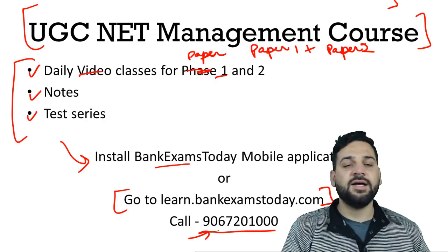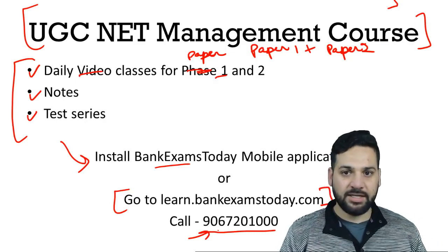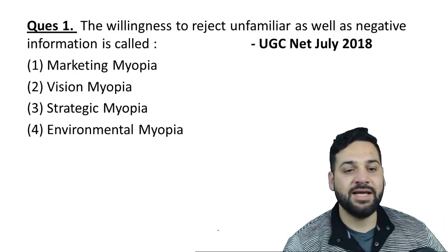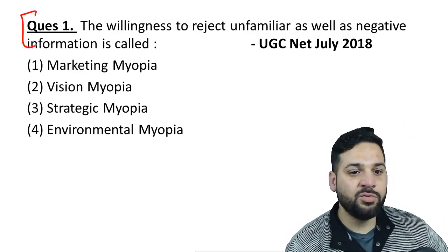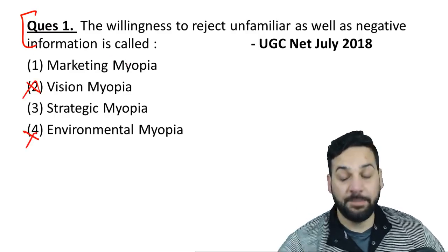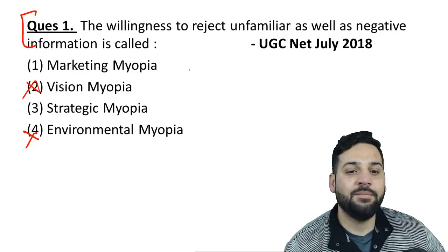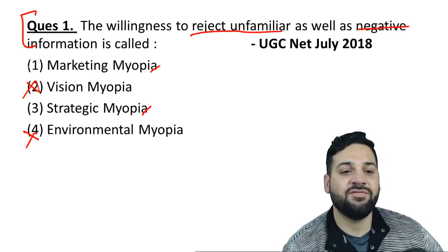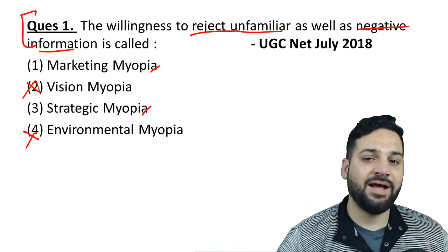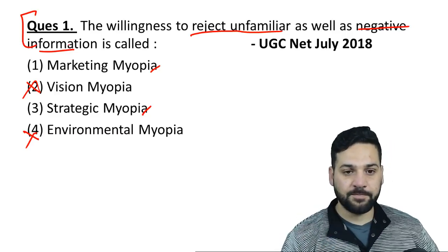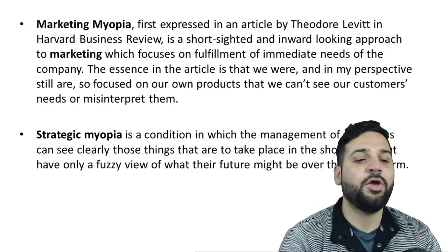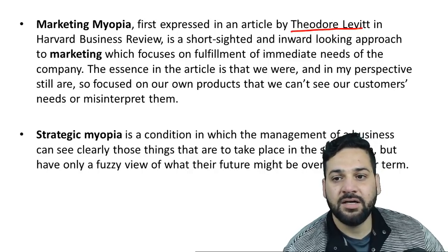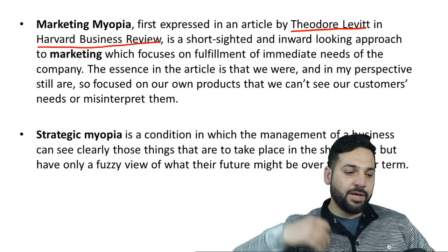65% of our students cracked IBPS marketing and I taught them. Now, Question 1: 'The willingness to reject the unfamiliar as well as the negative information is called what?' There is nothing like environmental myopia or vision myopia, so we can eliminate those. The answer could be marketing myopia or strategic myopia — the willingness to reject negative and unfamiliar information.